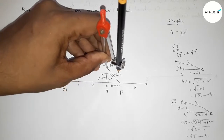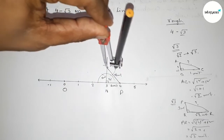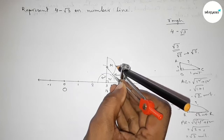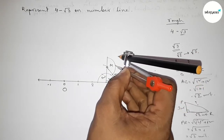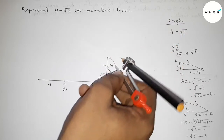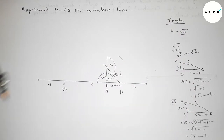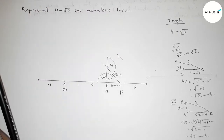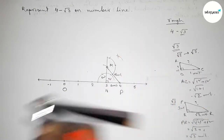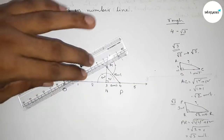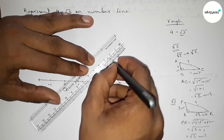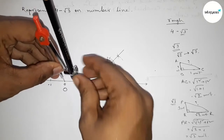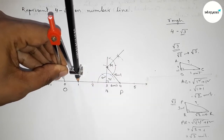Applying this concept, taking base MP equal to root 2. Now drawing a 90 degree angle at point M using a compass — placing the compass and cutting, then placing again and cutting. Drawing an arc with the same length and cutting so both curves intersect at a point. Now joining this.